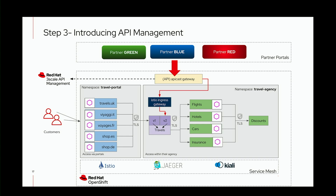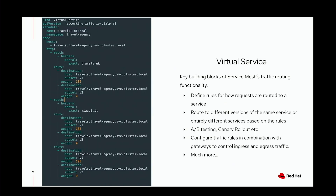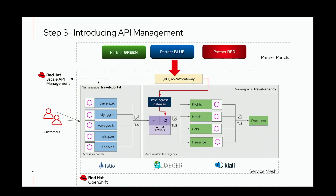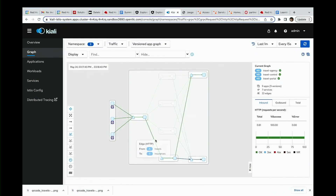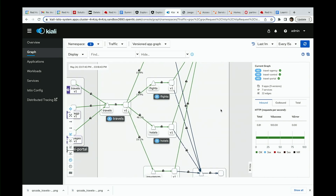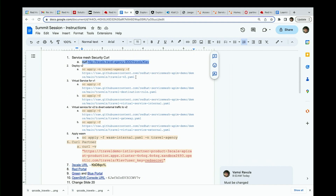This traffic diversion can be achieved with what we call a virtual service in Service Mesh — the backbone of traffic routing. In this virtual service, you're saying: if service calls have these headers, like travels.uk or vrg.it (our internal portals), send 100% of the traffic to v1. For external traffic, you can say send that to v2. Currently we only have version one. I'm going to deploy version two and see what Service Mesh does by default. I still haven't deployed the virtual service yet.